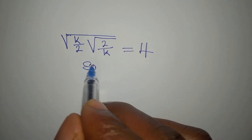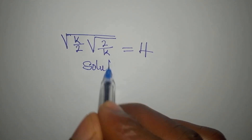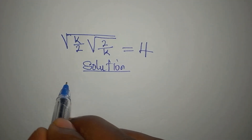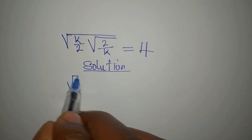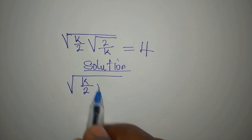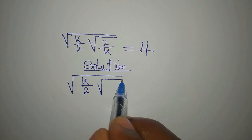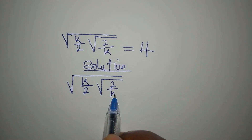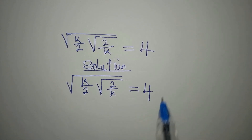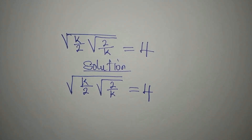Hi everyone, let's provide the solution to this problem. We have the square root of k over 2, multiplied by the square root of 2 over k, equals 4. There are several ways we can deal with this problem, but let's use this method.